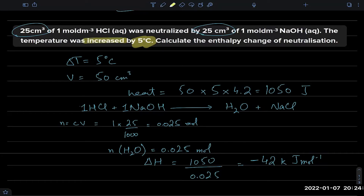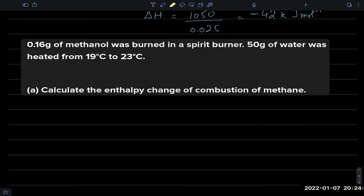Let's do another question. 0.16 grams of methanol is burned and produces heat energy absorbed by 50 grams of water, heating it from 19°C to 23°C — a change of 4°C. Calculate the enthalpy of combustion of methanol.